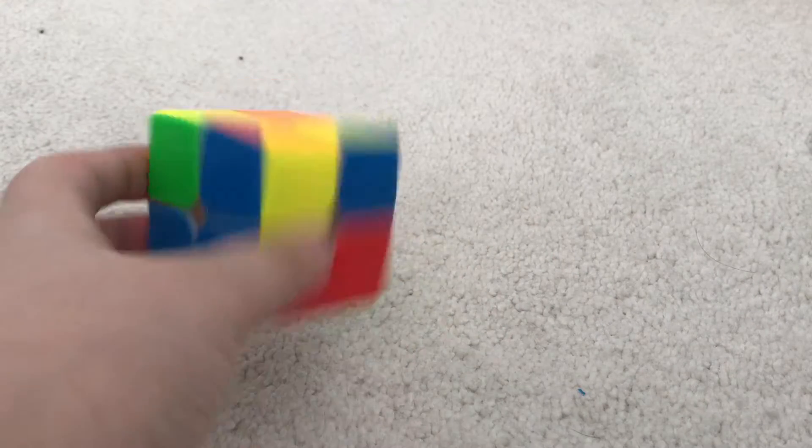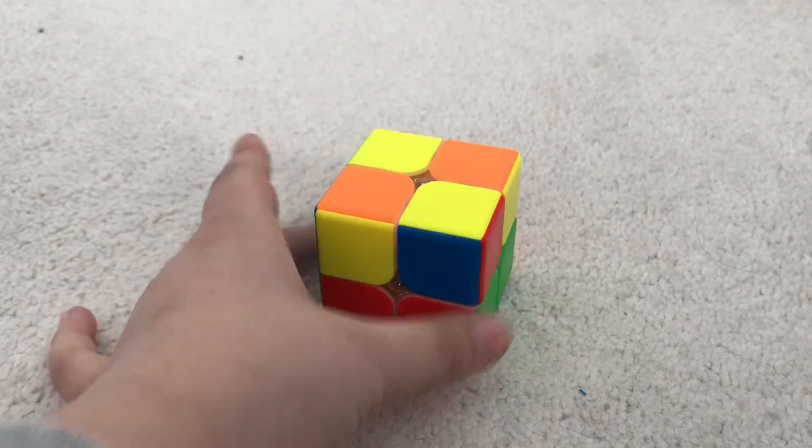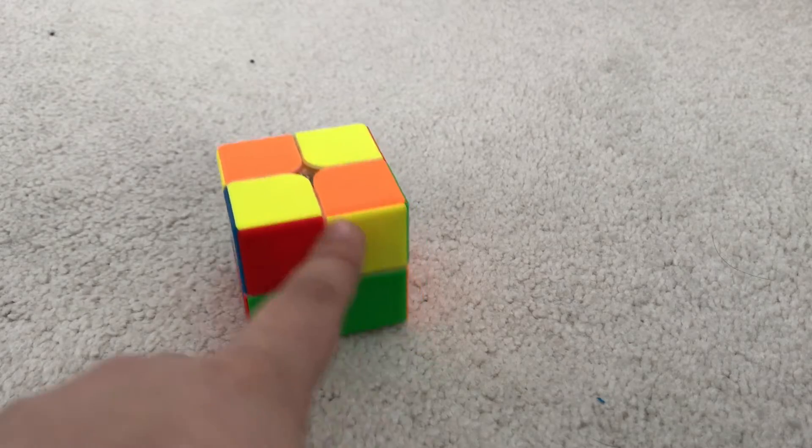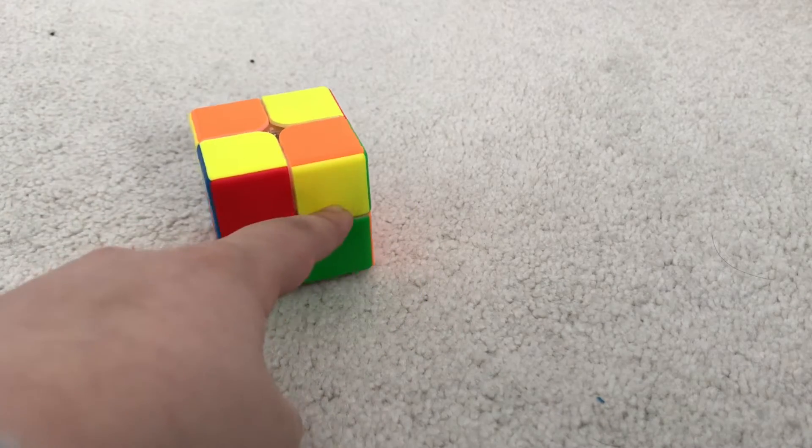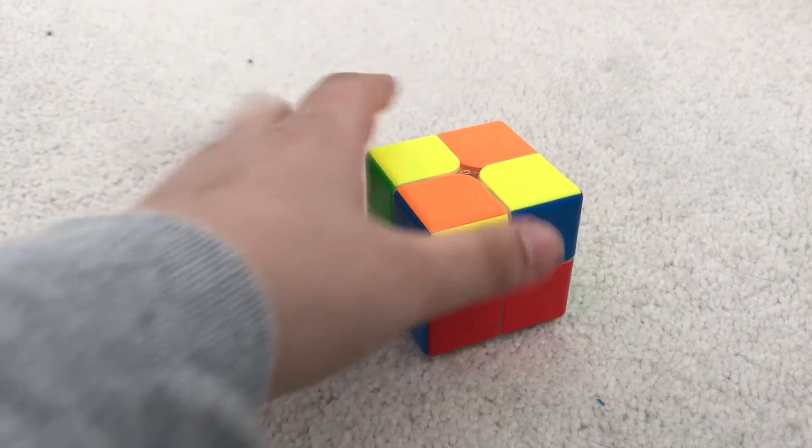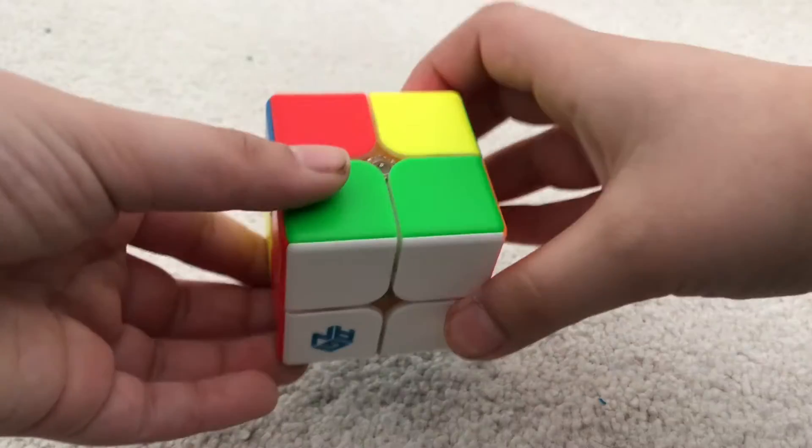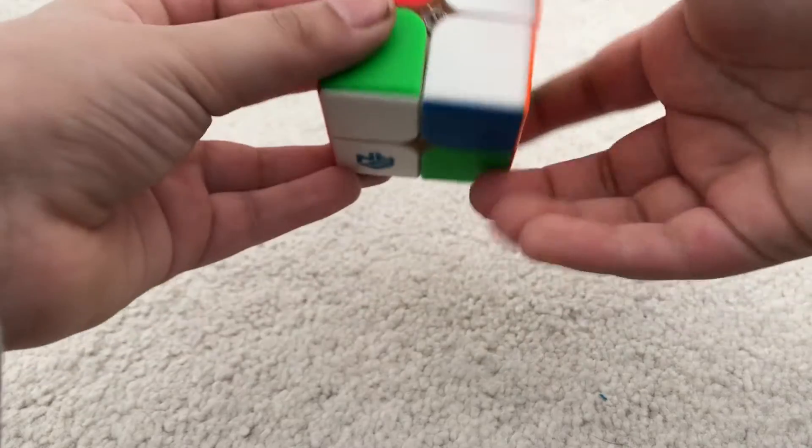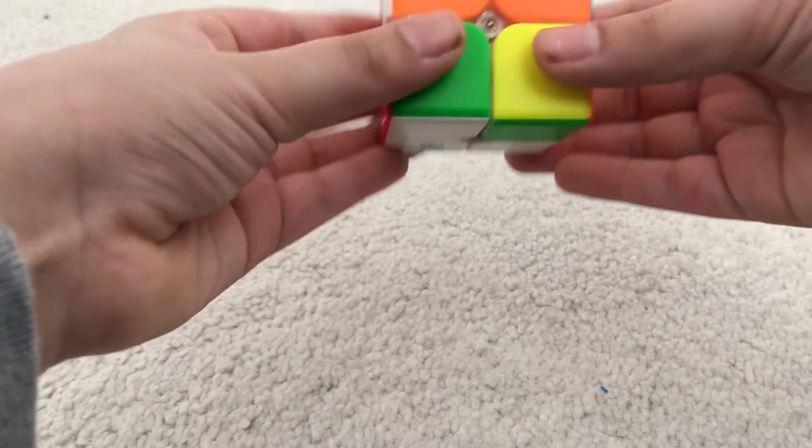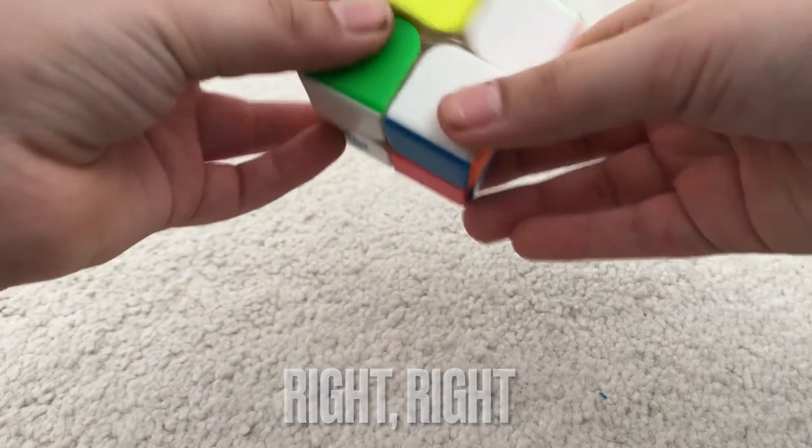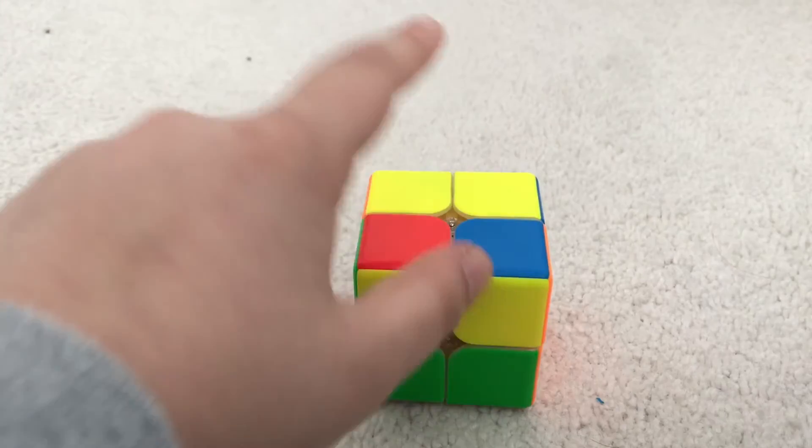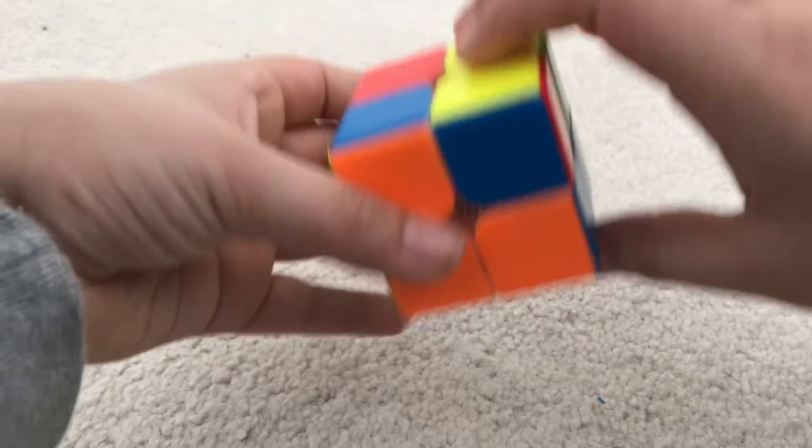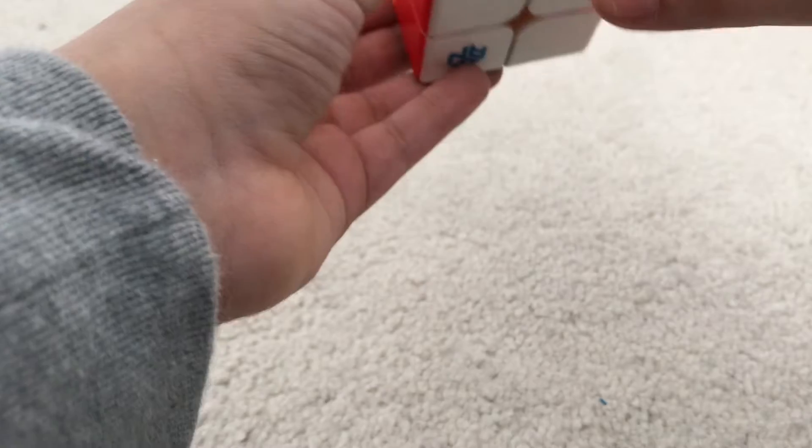All right, we don't care about this, we just want to solve this. The way we do that is we find one, no matter what case you're in, find the yellow sticker facing towards you. Okay, so we have two, and then you're going to use this algorithm: up, left, down, left, up, left, left, down. Okay, so that will get us to here. This is another case you can have. For this case, just turn it over here and do the same thing.